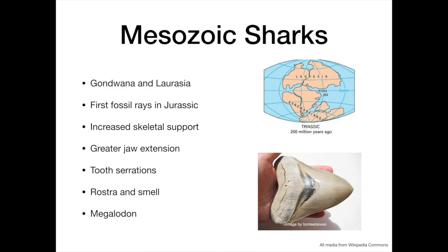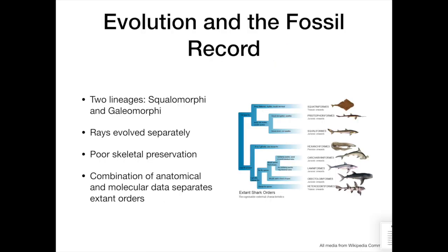It was during the Mesozoic that the great Megalodon shark roamed the seas, a huge predator that was ancestral to the Great White Shark. The sharks diverged into two lineages, the squalomorphic and the galeomorphic, each with differing characteristics; however, the rays evolved separately.